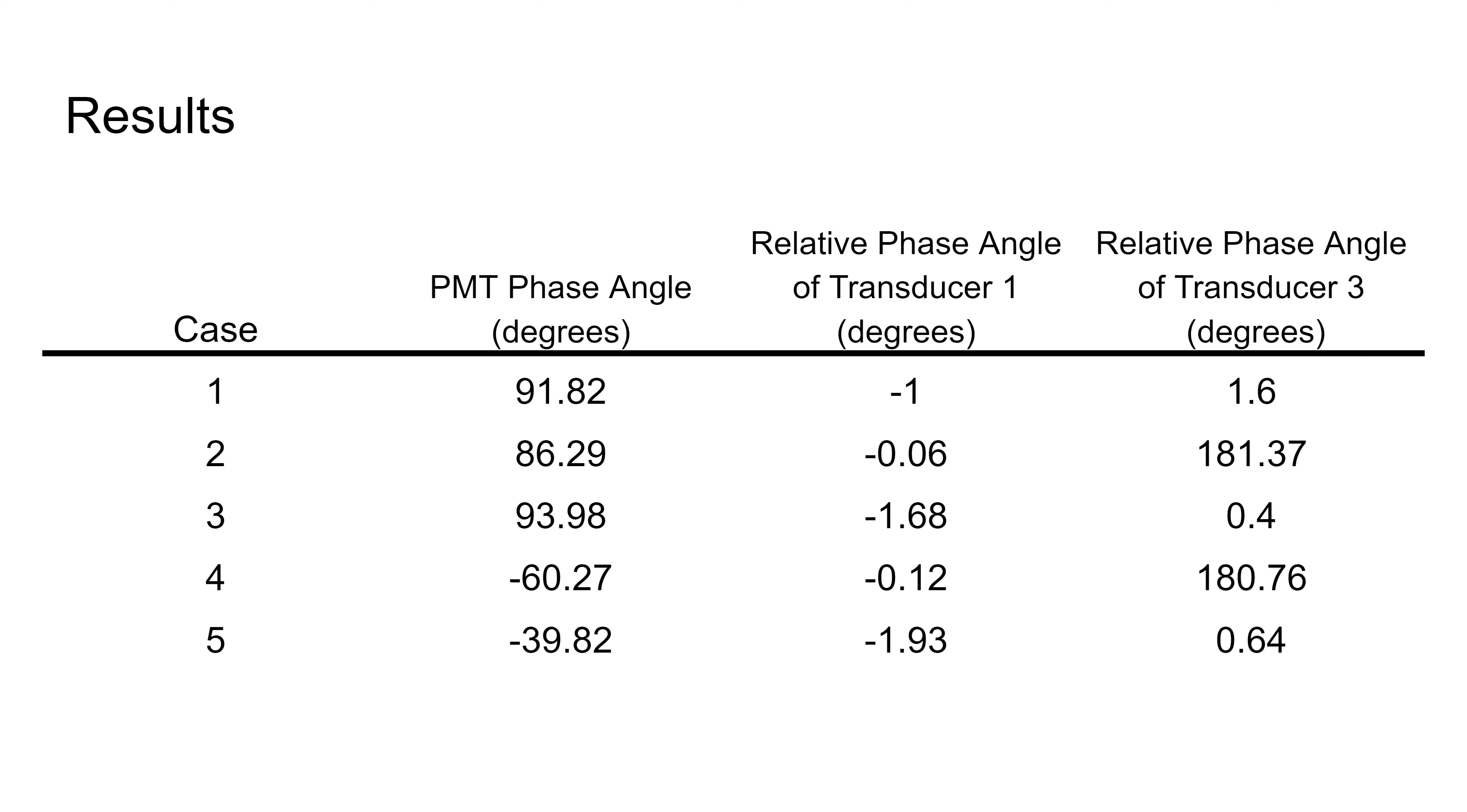Here we have the phase angle of the photomultiplier as well as the relative phase angles of the top and bottom transducers to the center transducer in each case. One thing of note here in the two non-resonant cases, so two and four, we see that there's a 180 degree relative phase angle between those two transducers from the top and bottom.